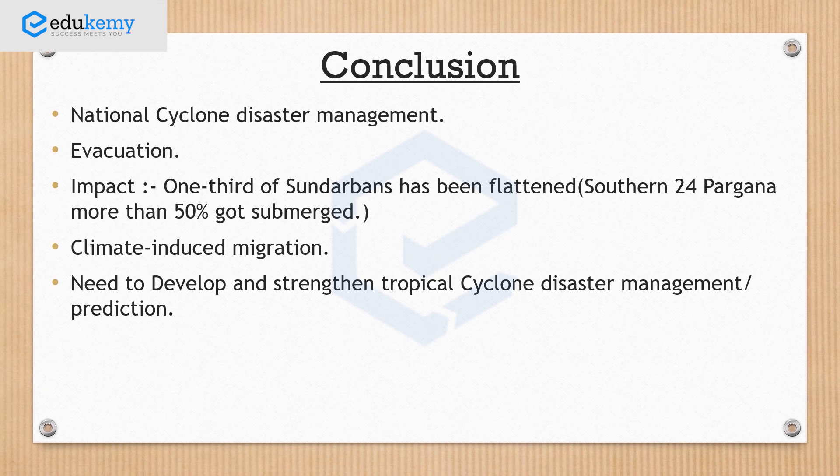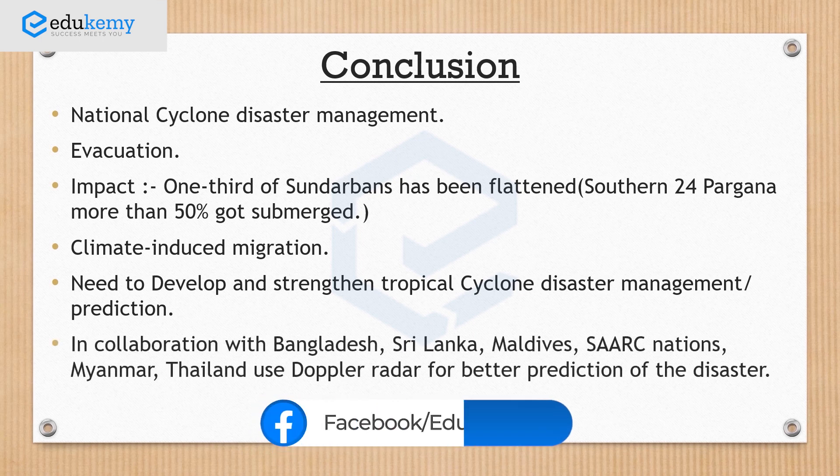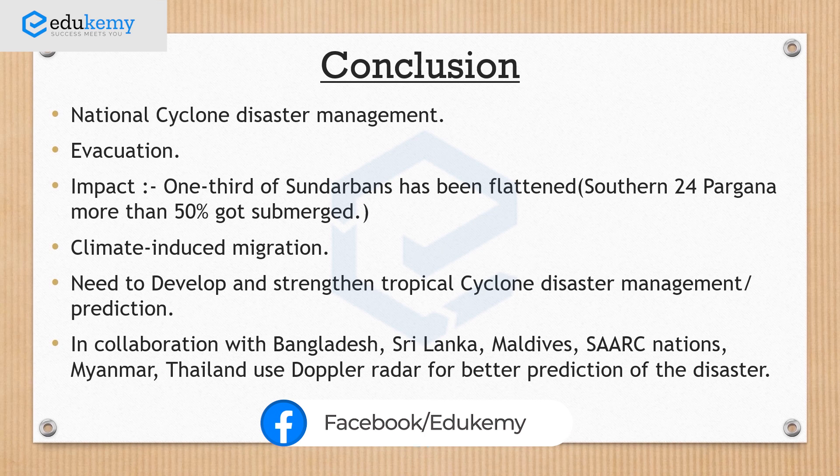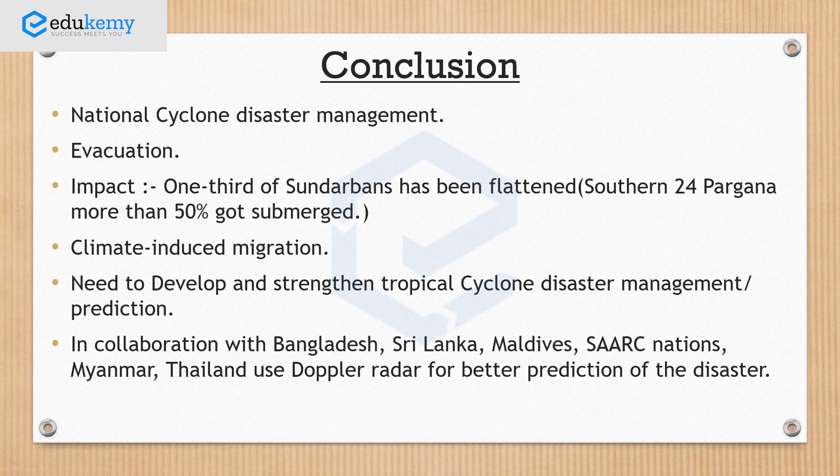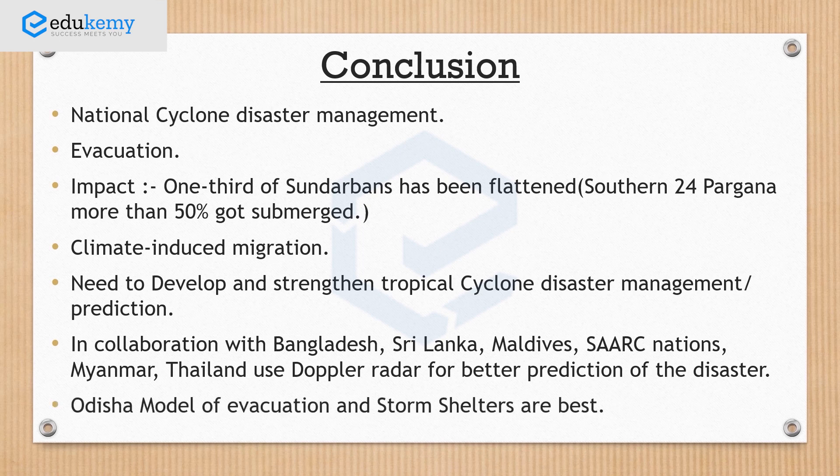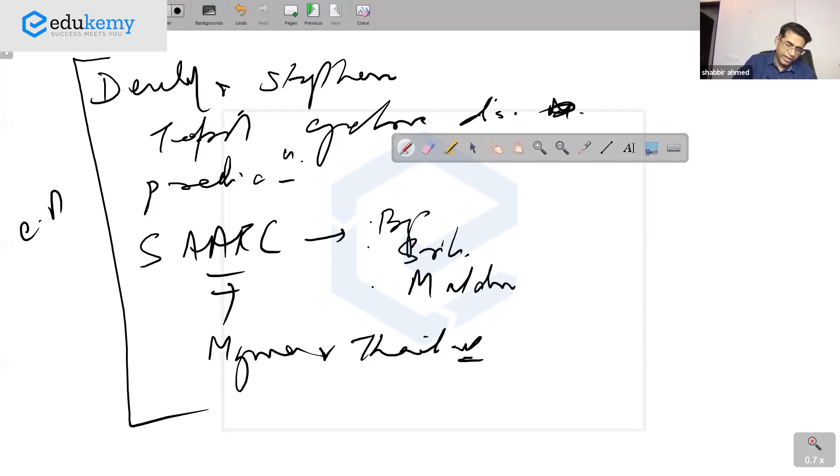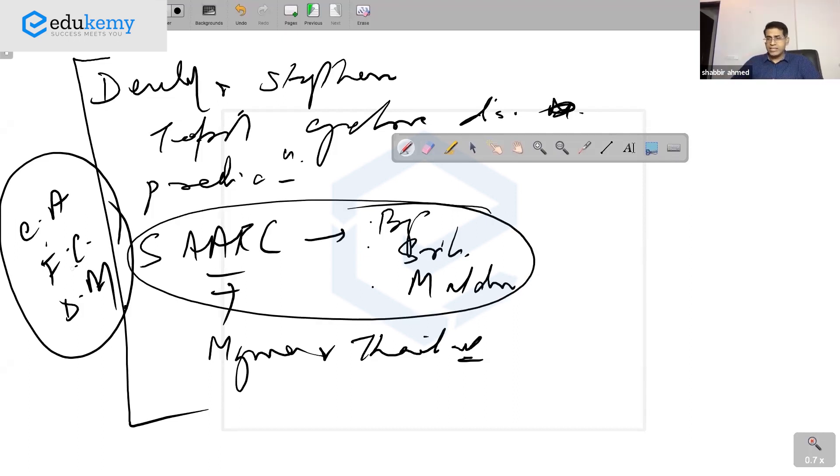The conclusion could be to develop and strengthen tropical cyclone disaster prediction, maybe in collaboration with other SAARC countries - Bangladesh, Sri Lanka, Maldives, and SAARC Plus including Myanmar and Thailand. Talk about the Odisha model of evacuation and shelter homes. Use this type of answer format for current affairs, forecasting, and disaster management to wind up the answer.